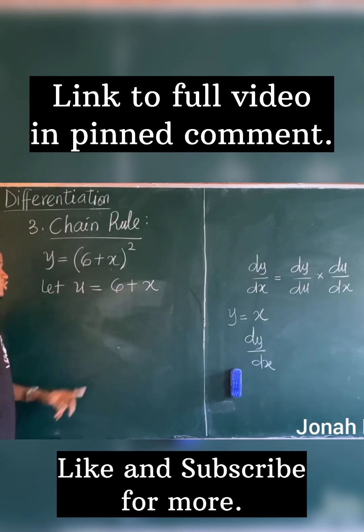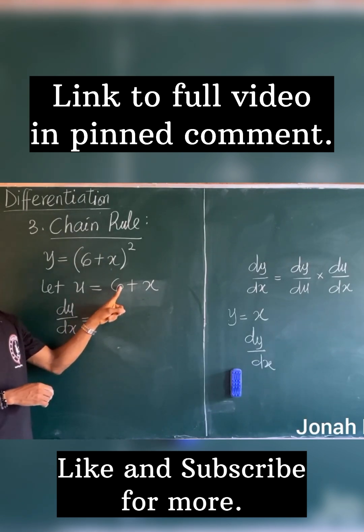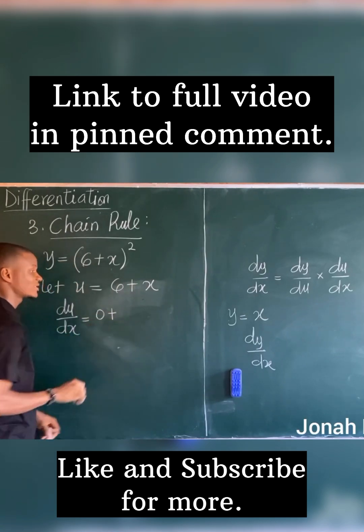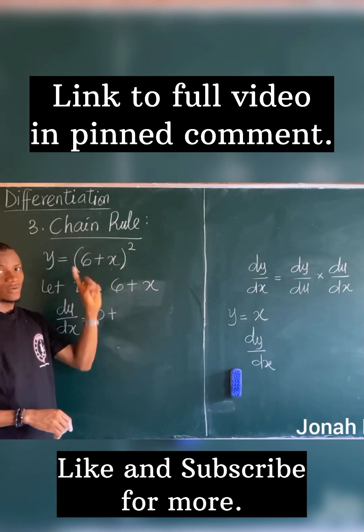So du/dx is equal to—for this now I'll use my general method. If I differentiate 6, a constant, it gives you zero, so I'm having zero plus—if I differentiate x it gives you 1.